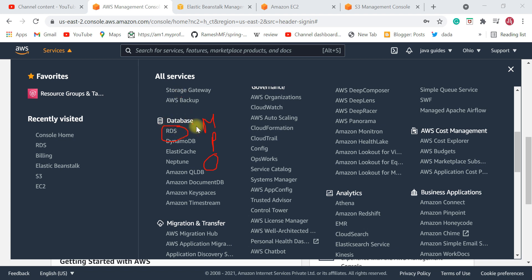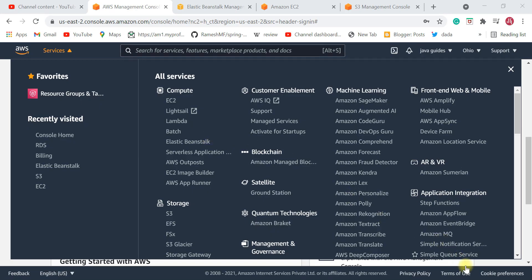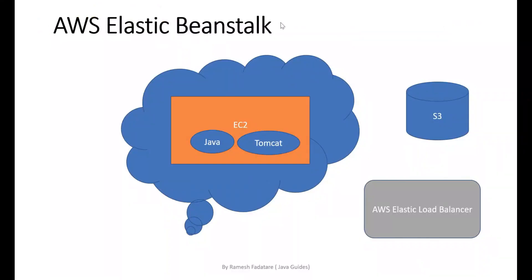Apart from these three services, you also need to know about Elastic Beanstalk. Elastic Beanstalk is very important — it will provide all the resources on AWS required to run our applications. For example, Elastic Beanstalk will create an EC2 instance behind the scenes and install Java or Tomcat based on the application platform you choose.